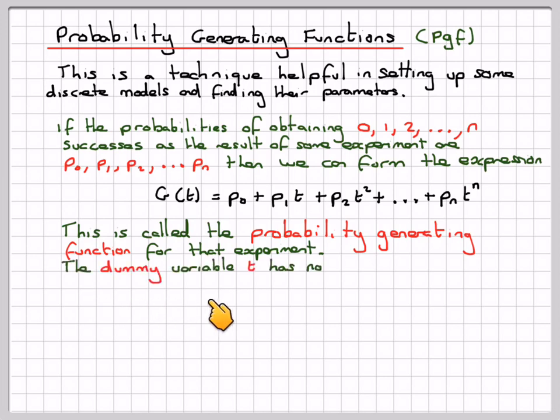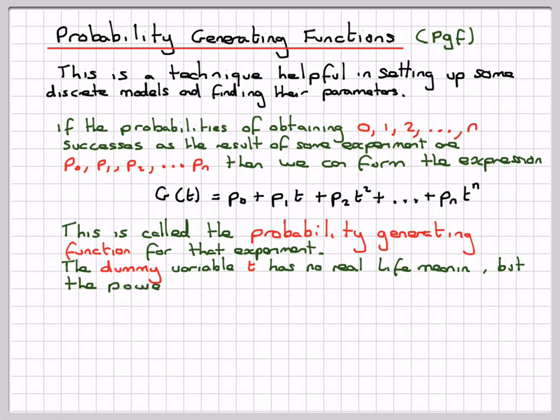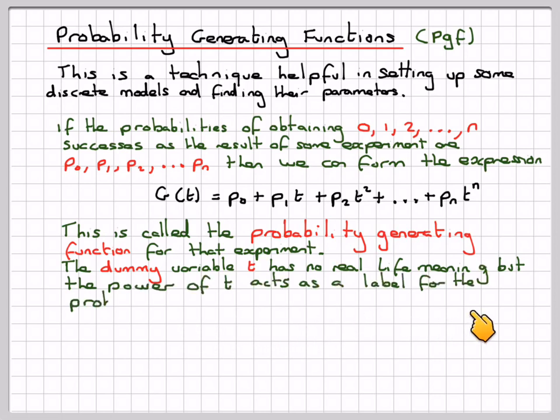The dummy variable T has no real-life meaning, but the power of T acts as a label for the probability.